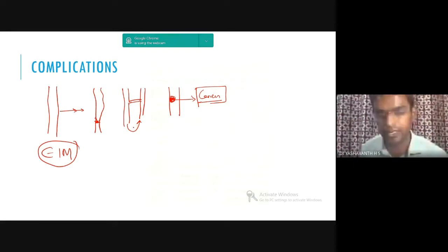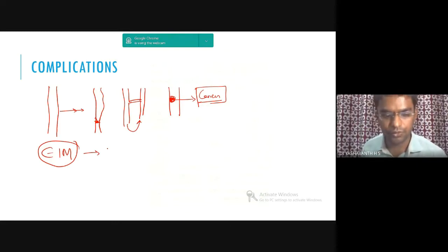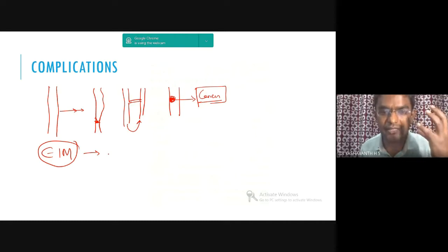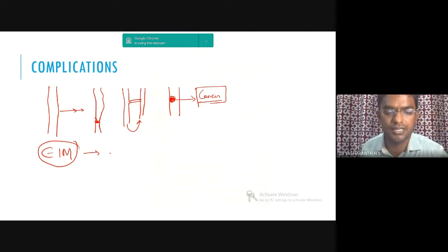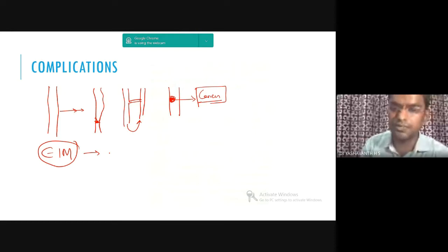Extra-intestinal manifestations include joints — what we call enteropathy-associated arthritis, which Dr. Jacob has covered in detail. There can also be liver involvement, such as primary sclerosing cholangitis, and eye involvement including uveitis, scleritis, and multiple other manifestations. A patient is affected in multiple perspectives. Disease like Crohn's or ulcerative colitis is not like cancer where survival is short — most patients can have a normal lifespan if diagnosed early and treated appropriately, but the quality of life is what is hampered.